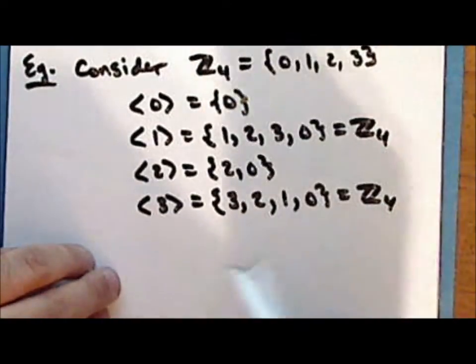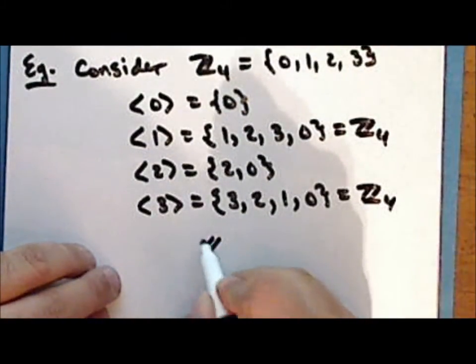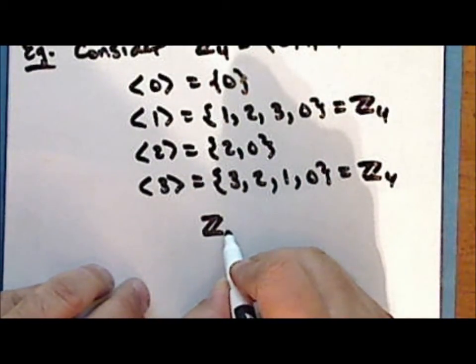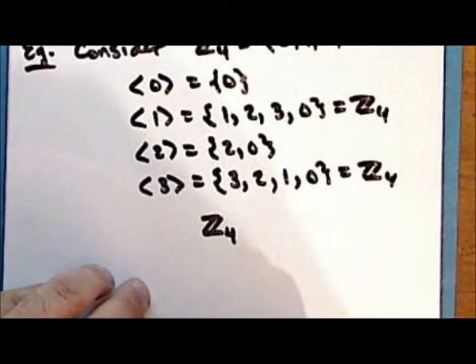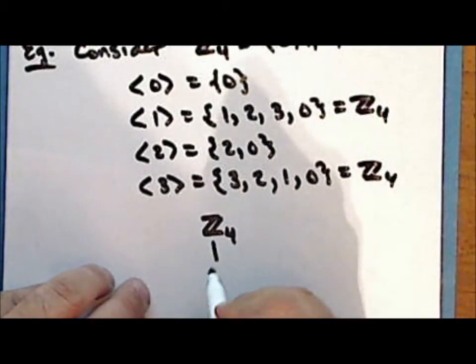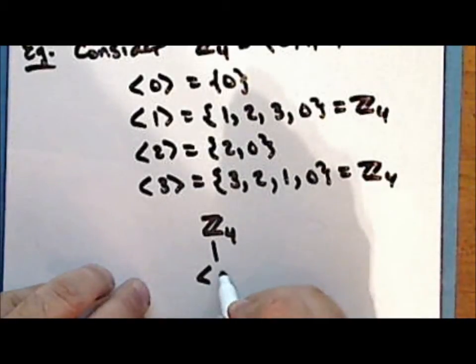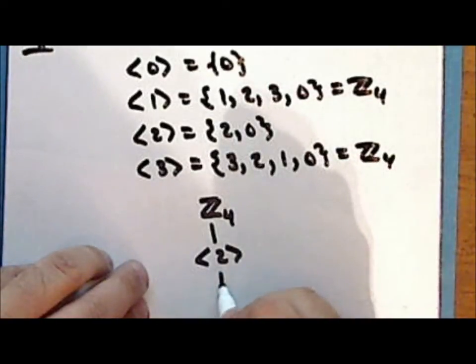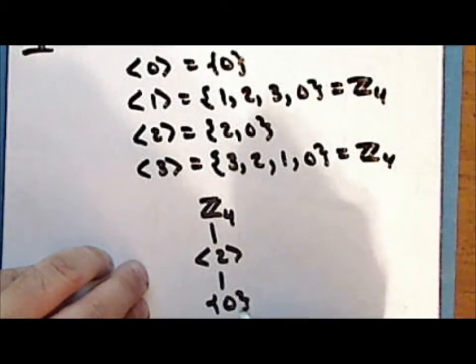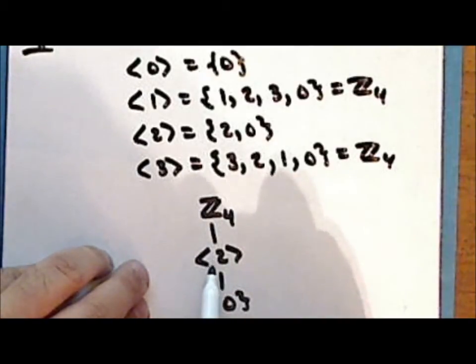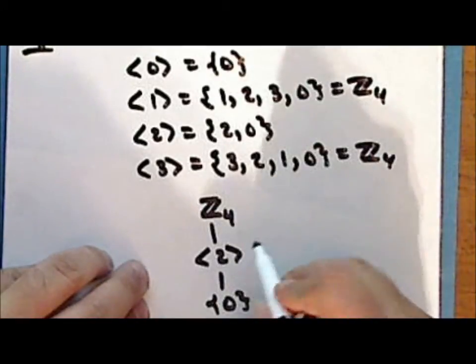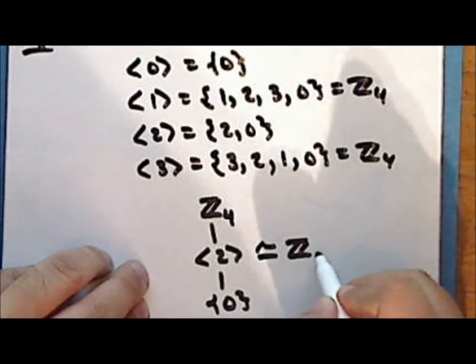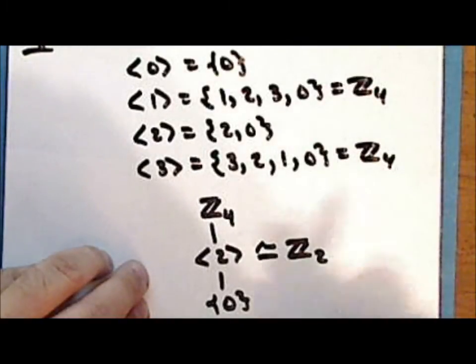We can look at a subgroup diagram beginning with the entire group, or the improper subgroup, of the integers modulo 4. This group has as a subgroup the non-trivial subgroup generated by the element 2, which in turn has the trivial subgroup containing the identity element only. Notice that the subgroup generated by the element 2 is isomorphic to the integers modulo 2 under addition modulo 2.